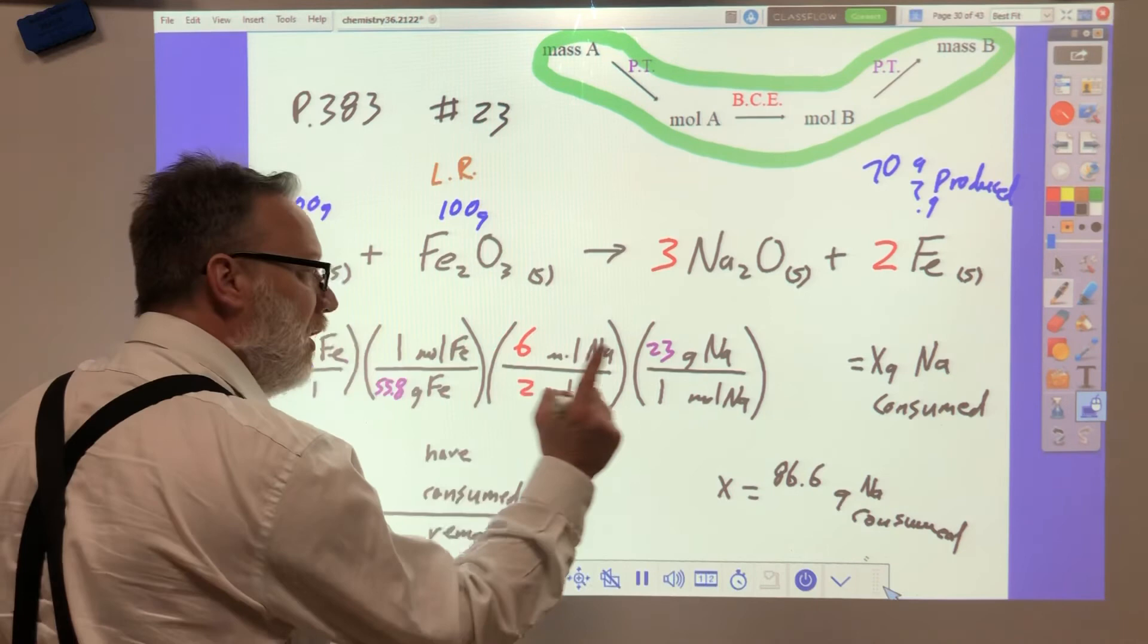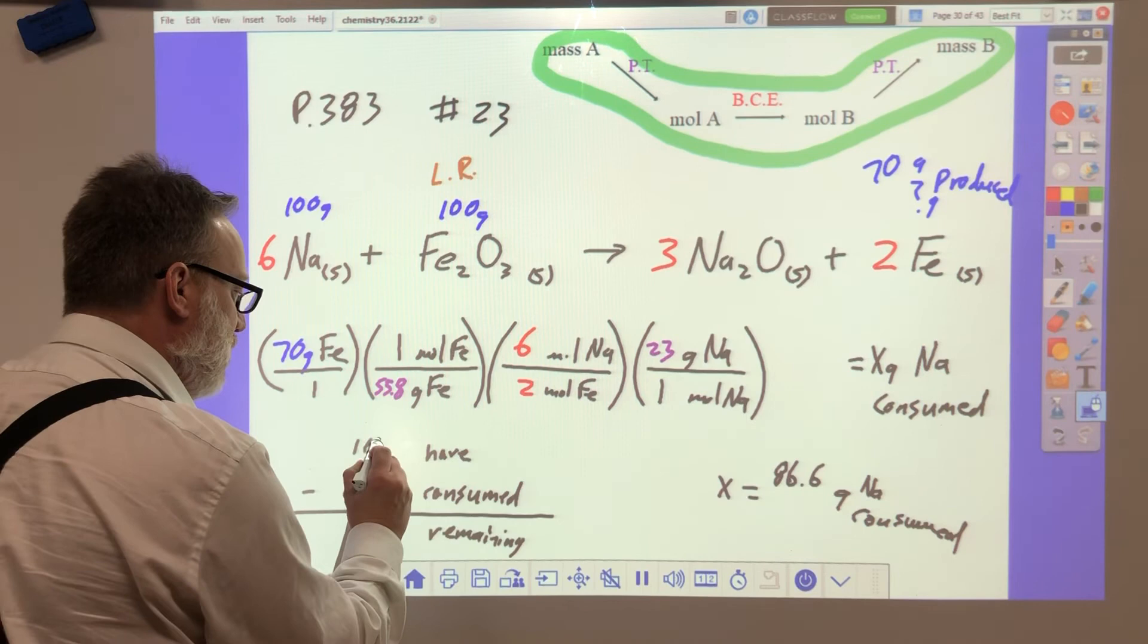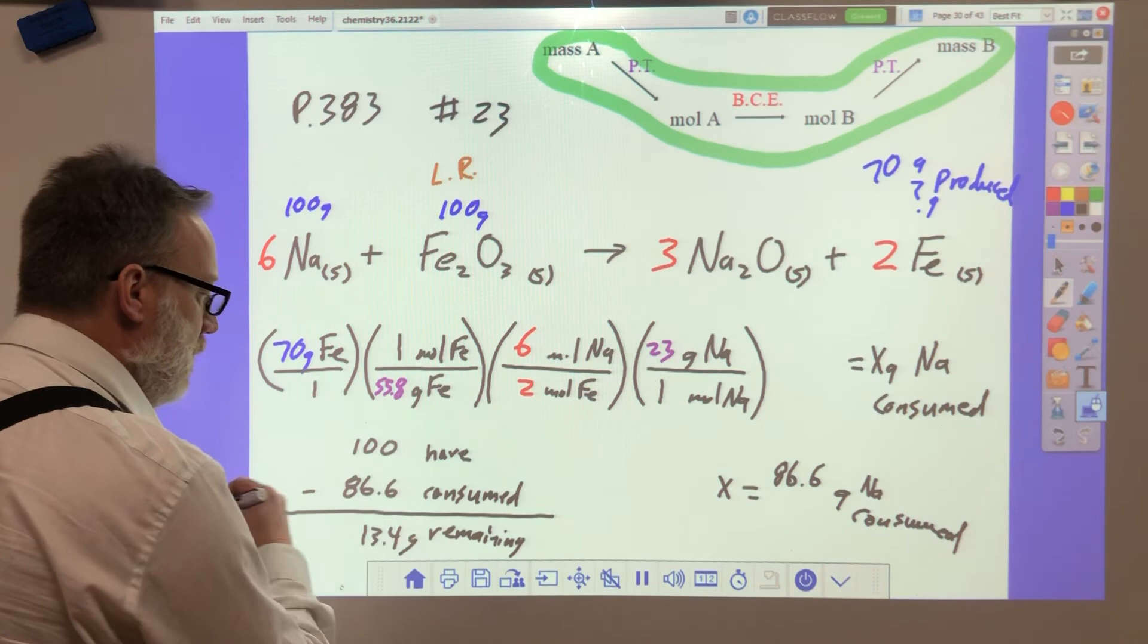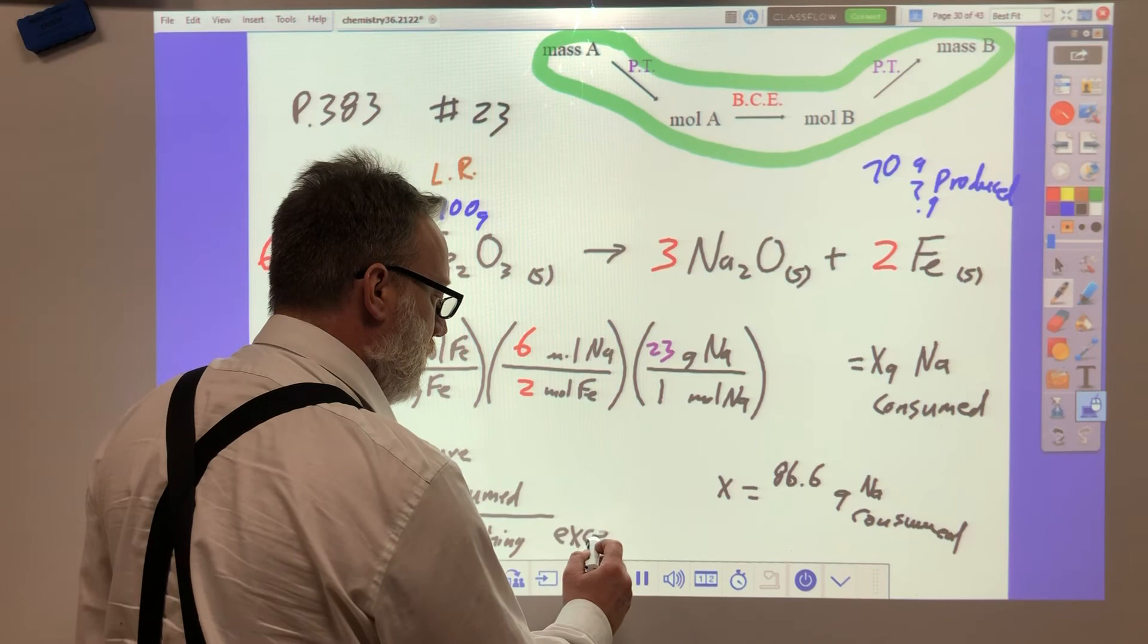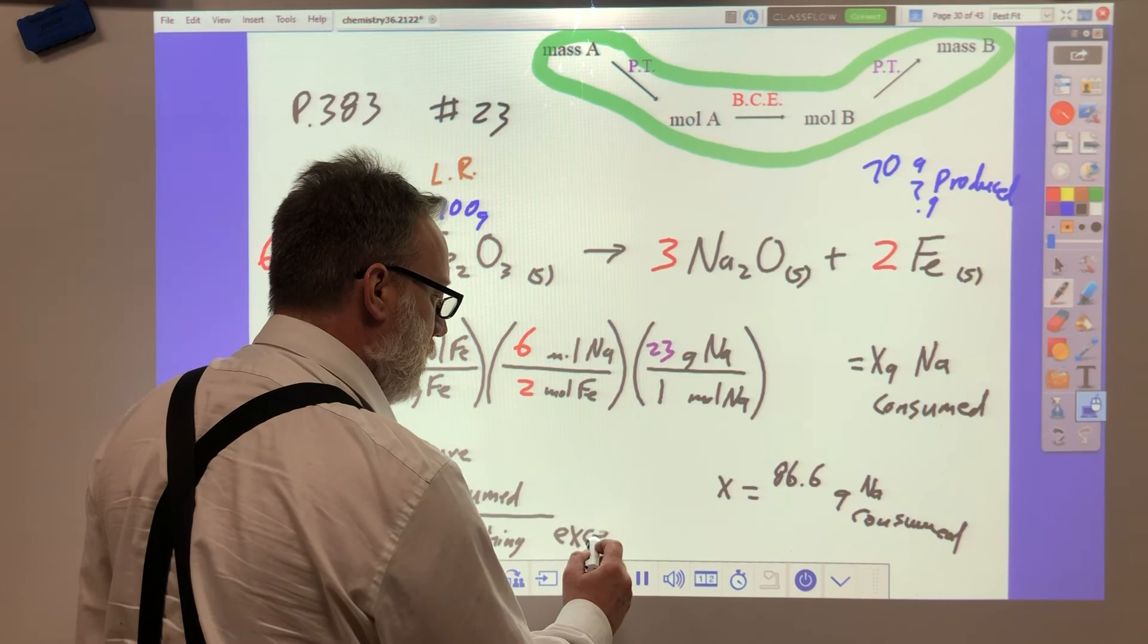Now, if I consumed 86.6 grams of sodium and I started with 100, then I should be left with 13.4 remaining excess. How do you know? This is remaining. This is your excess. Take it through. Pay attention. You can do this. It's not that hard.